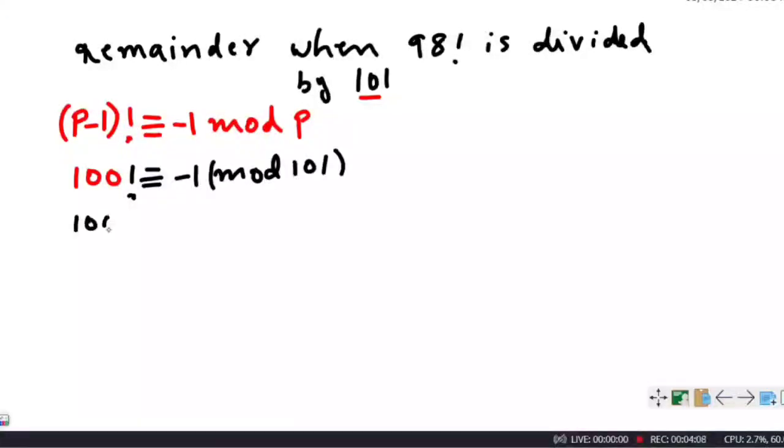Write 100 factorial as 100 × 99 × 98 factorial, which is congruent to -1 mod 101.